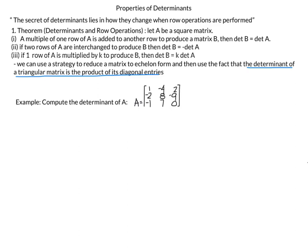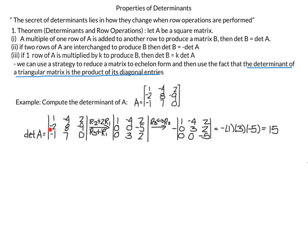The example is to compute the determinant of A, where A is the matrix with column vectors (1, −2, −1), (−4, 8, 7), and (2, −9, 0). I've written matrix A with determinant signs and will use row operations to produce echelon form, which is very similar to what we've been doing in other chapters.